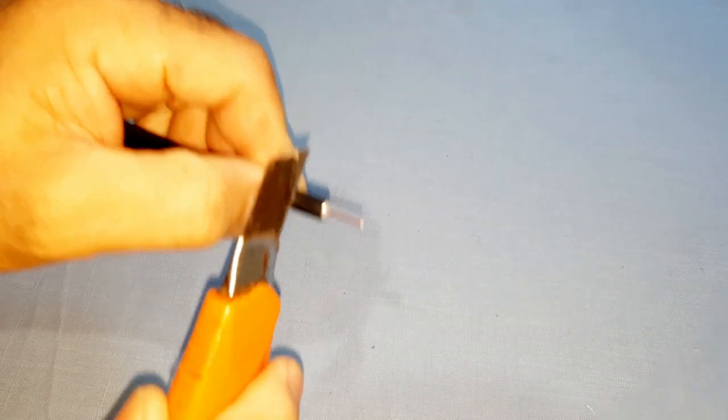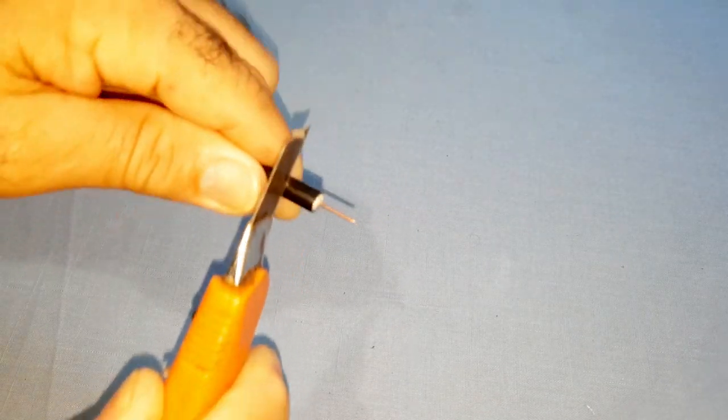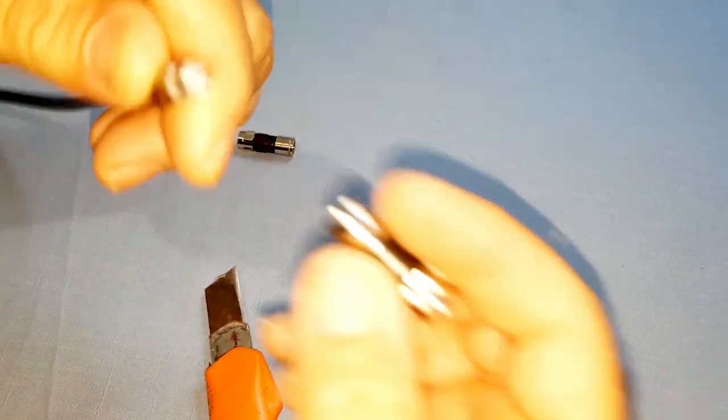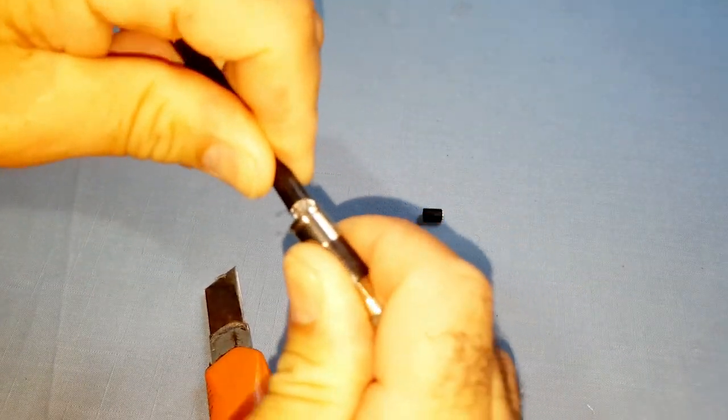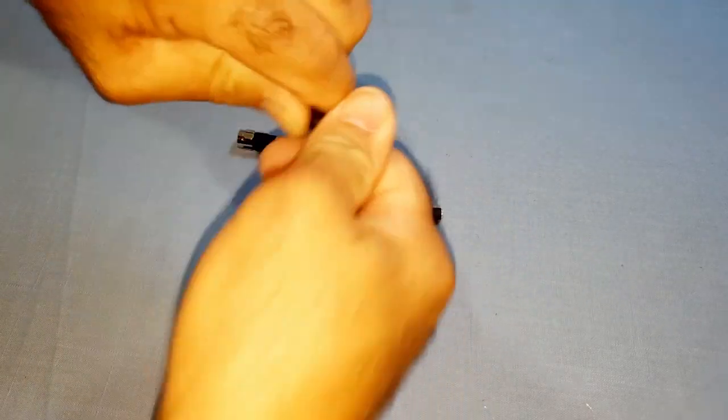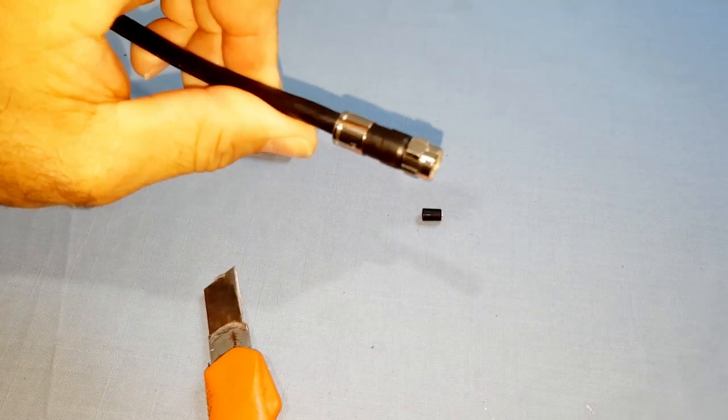Install the F-type connectors. At each end of the cable, install an F-type connector. Make sure to follow the manufacturer's instructions to properly attach the connector to the coaxial cable. Adjust the connectors. Ensure that the connectors are securely tightened and firmly connected to the cable to ensure a secure connection.